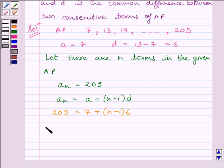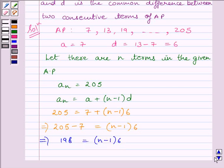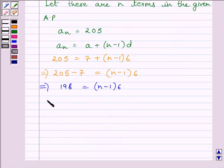Now, this implies 205 minus 7 equals (n minus 1) multiplied by 6. This implies 198 equals (n minus 1) multiplied by 6. This implies n minus 1 equals 198 divided by 6. This implies n minus 1 equals 33.